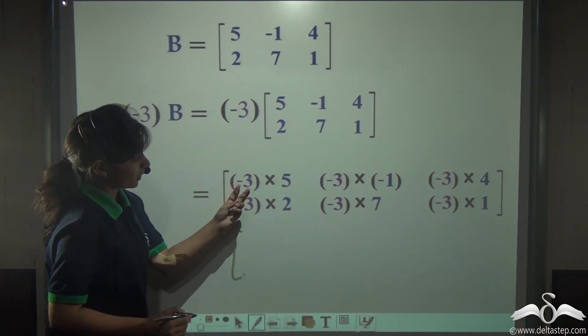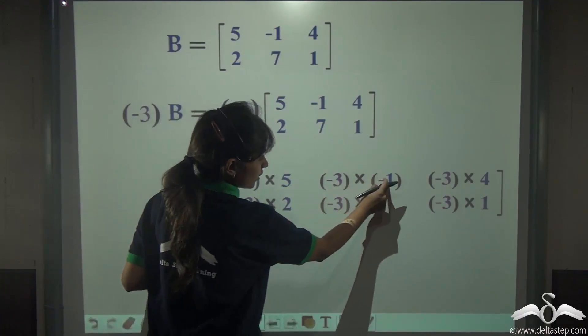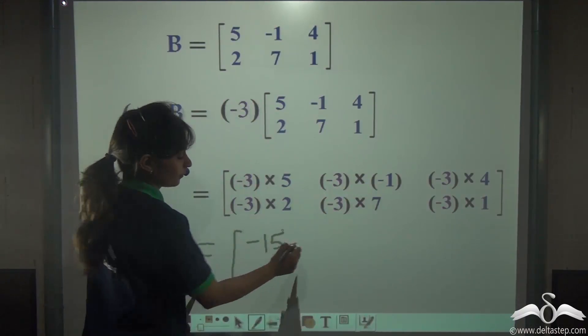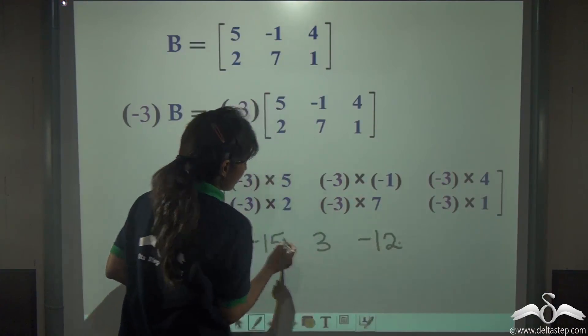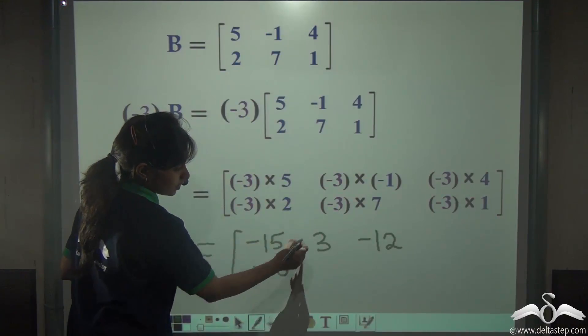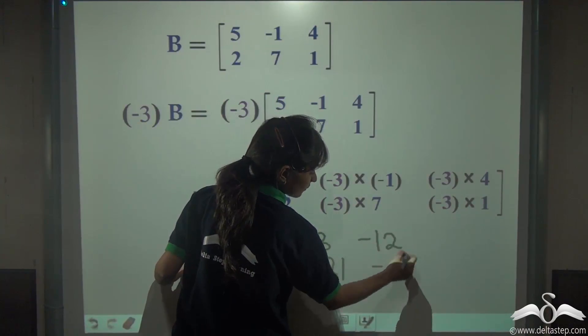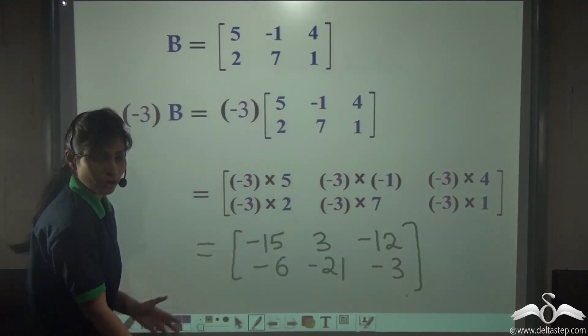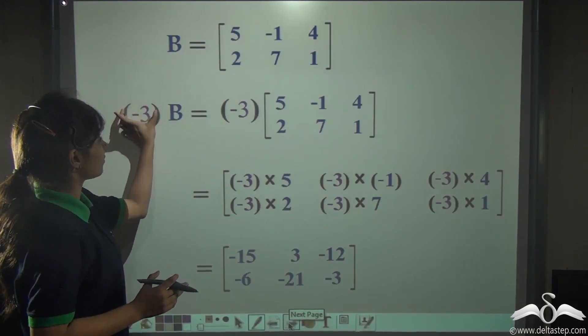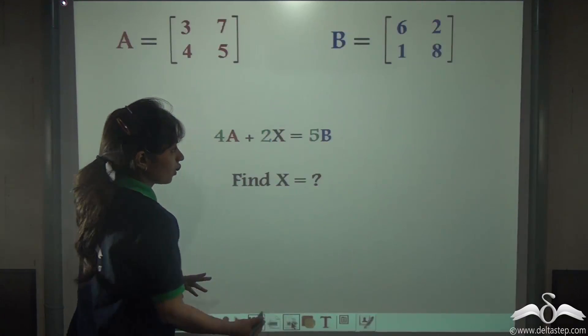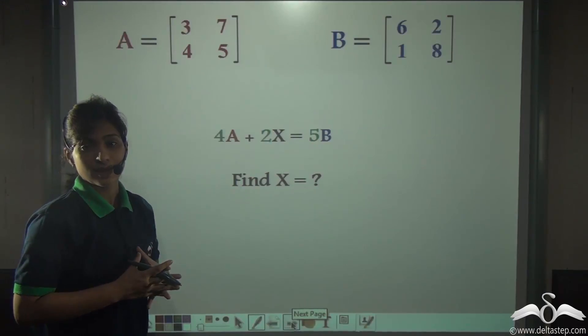What do you get? Minus 3 into 5 is minus 15. Minus 3 into minus 1 is 3. Minus 3 into 4 is minus 12. Minus 3 into 2 is minus 6. Minus 3 into 7 is minus 21. And minus 3 into 1 is minus 3. So this is your answer. Now you more or less have an idea how to multiply a given number with a matrix.